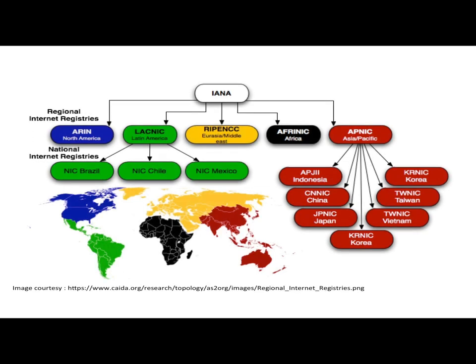IANA decentralizes the task of assigning IP addresses by allocating large chunks of IP addresses to 5 regional internet registries, which are further responsible for allocating IP addresses in their zone.